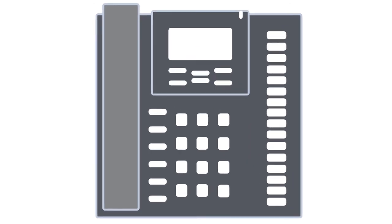If you're dialing an external number, first dial 9 for an outside line. Then dial the number you want to call and press the Dial function key below the screen. Alternatively, you can hit the green Call button.